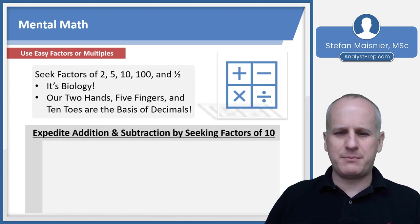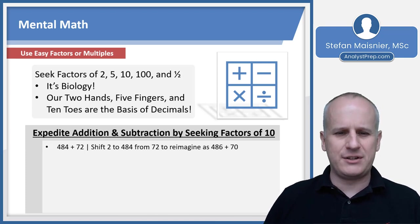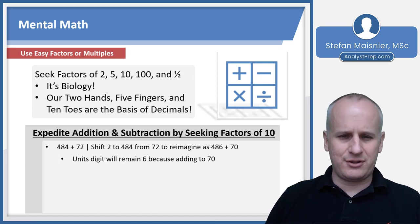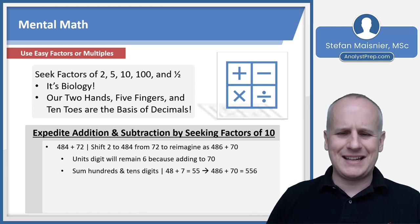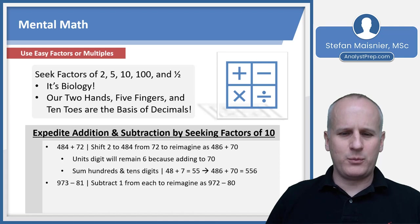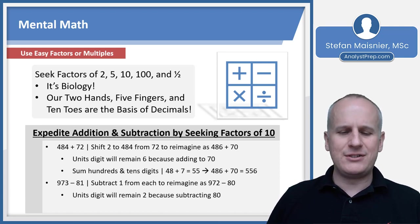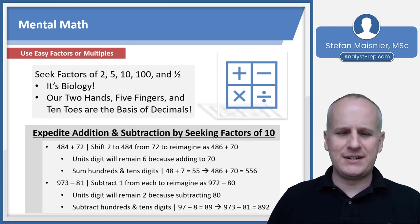Now, you can always expedite addition and subtraction by seeking factors of 10 as well. So if you're looking at 484 plus 72, you could shift 2 from 72 to 484 and reimagine that as 486 plus 70, because it's the exact same. And then your units digit remains as a 6, because when you have a 0 in your units digit, it doesn't change the units digit. And then you sum the hundreds and the tens digit, and we end up with 55 as 48 plus 7, so we end up with 486 plus 70 is 556. Similarly, if we're doing it with subtraction, we can subtract 1 from each of the values of 973 minus 81 to reimagine that as 972 minus 80. The units digit will remain a 2 because you're subtracting an 80. Then you subtract the hundreds and tens digits, so 97 minus 8 is going to be 89, and that's going to be 892, because we kept the 2 from the units digit, is the result of 973 minus 81.